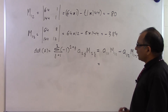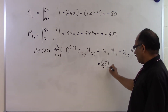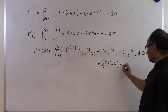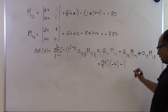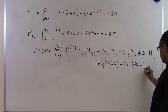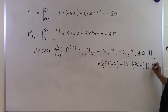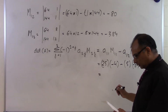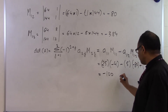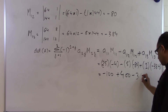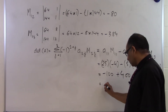Substituting values: A11 is 25 and M11 is minus 4, giving minus 100. A12 is 5 and M12 is minus 80, giving plus 400. A13 is 1 and M13 is minus 384, giving minus 384. Combining: minus 100 plus 400 minus 384 equals minus 84.